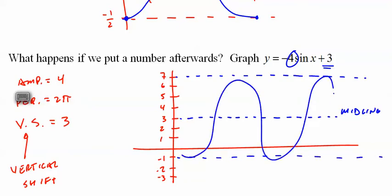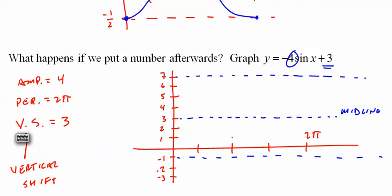Still four tick marks. One, two, four. Still the same period, so we label it. And now we graph. Sine starts in the middle, should go up. However, it's negative, so it's going to go down. And that's y equals negative four sine of x plus three.